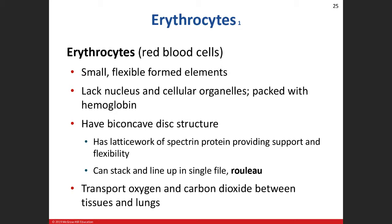Red blood cells make up the majority of your formed elements. They are flexible — they need to be flexible because they have to squeeze through small areas, and if they're damaged, they get discarded. They're small. A mature red blood cell has no nucleus, so it only lives for about 120 days on average, and it also has no cell organelles.